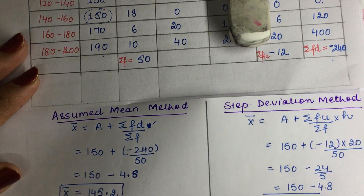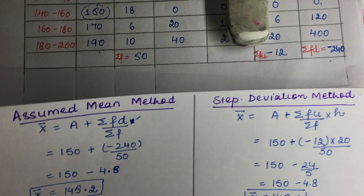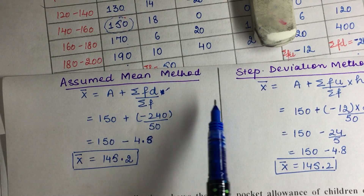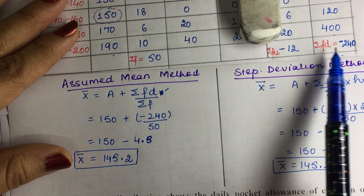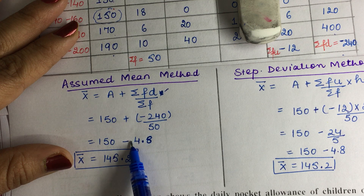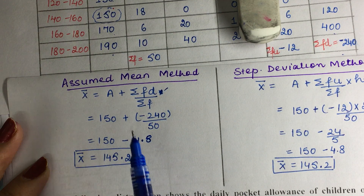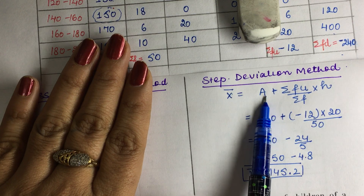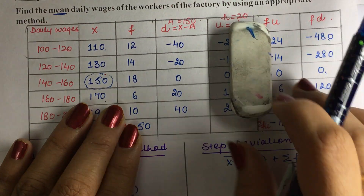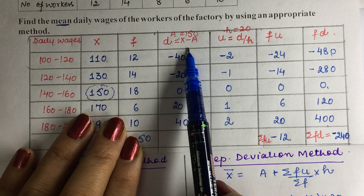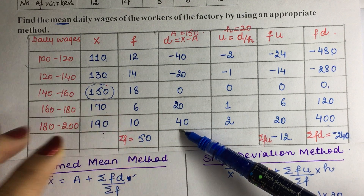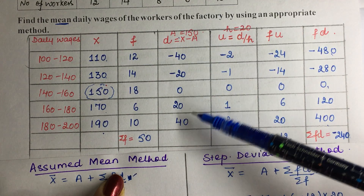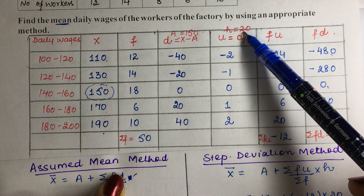If you want to use Step Deviation Method instead, you don't find d directly — you find u = d divided by h, where h is the common class width. Here h = 20. So for d = minus 40: u = minus 40/20 = minus 2; for d = minus 20: u = minus 1; then 0, 1, 2. Then calculate f into u for each row.